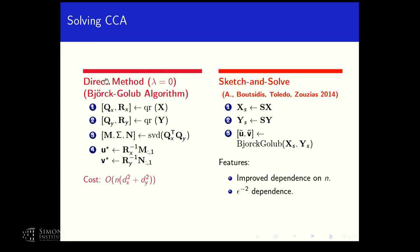There is also a sketch-and-solve approach, which appeared in a 2014 paper by myself, Christos Boutsidis, Ivan Toledo, and Anastasia Zouzias. The idea is simple: you sketch X and Y using a sketch matrix — sampling or randomized — as long as you have a subspace embedding on X and Y. Once the problem size is reduced, you apply the direct Bjork-Golub algorithm to find an approximate solution. This gives improved dependence on N but with epsilon^{-2} dependence on the accuracy parameter, measuring how well you approximate the correlation.